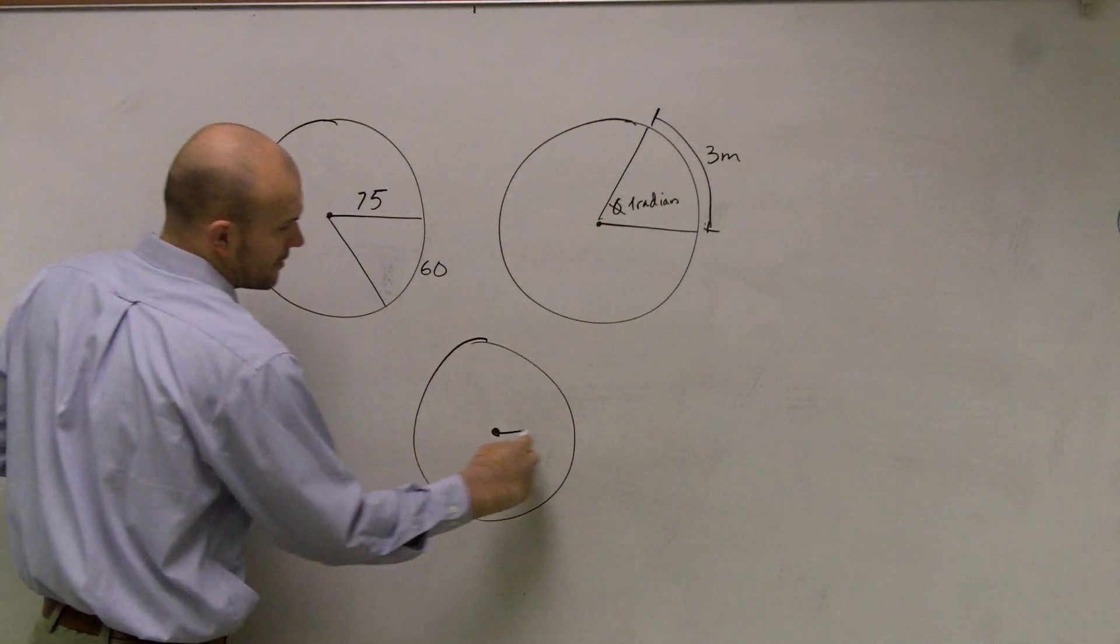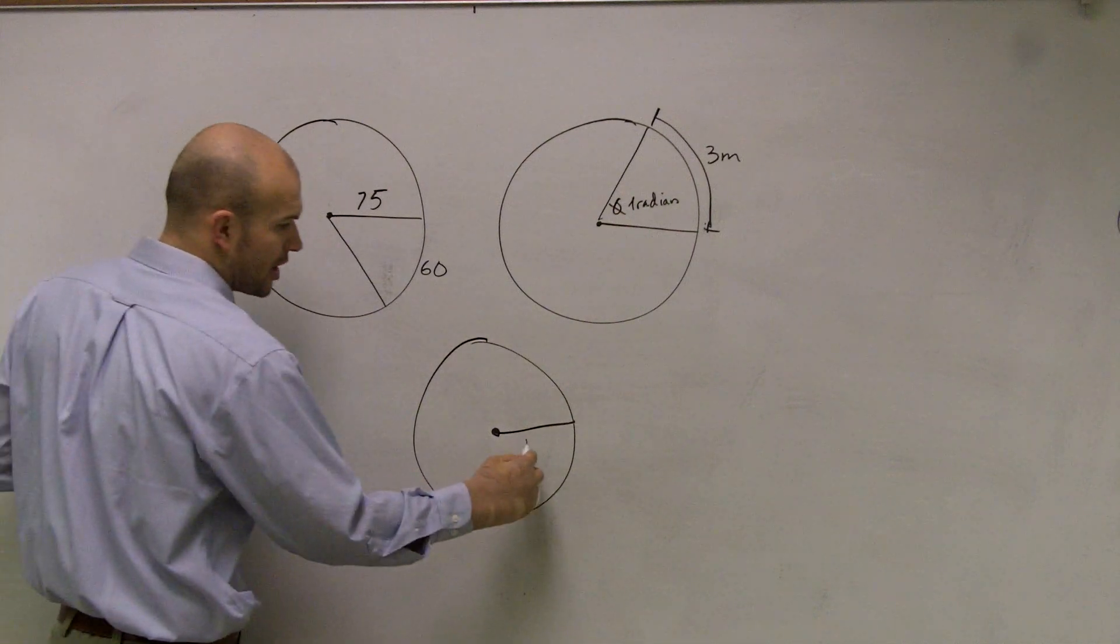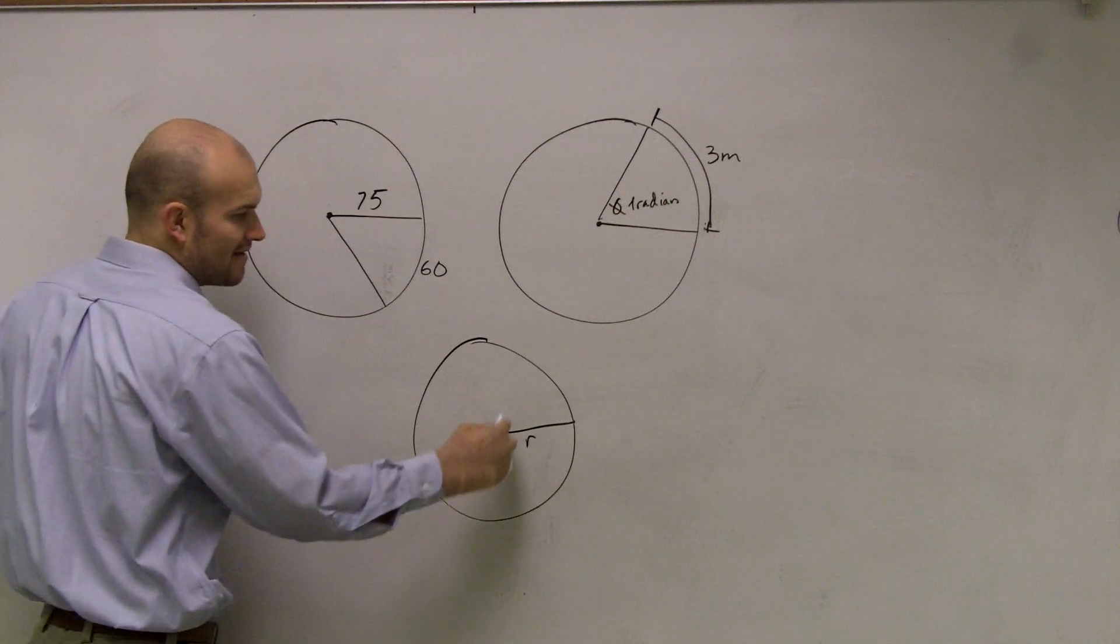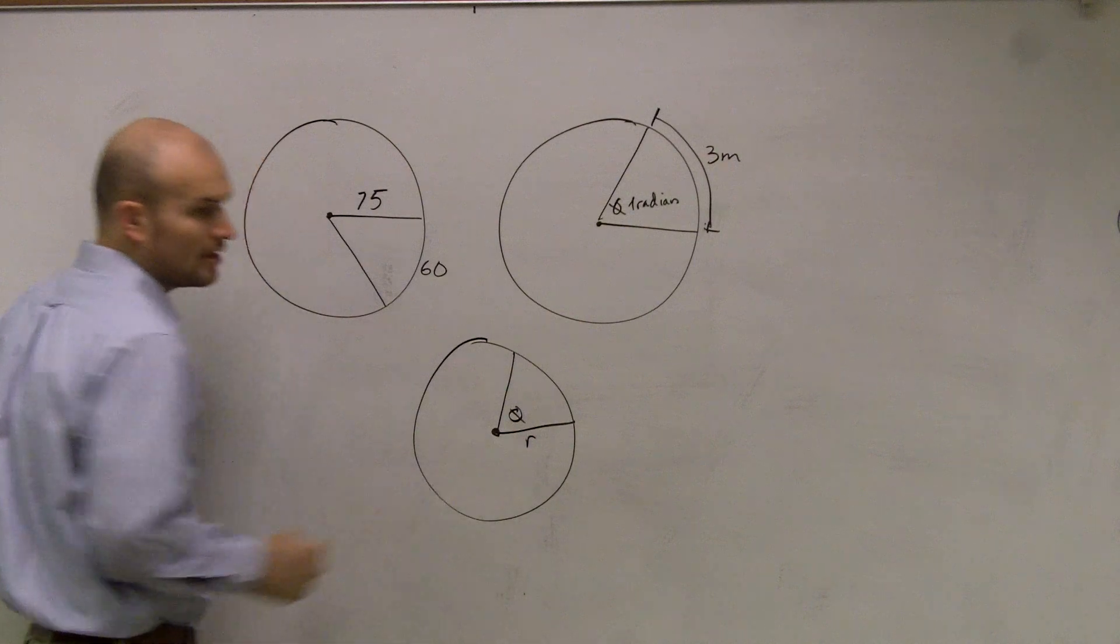On a circle, you have your radius, which is r. And we also have what we call a central angle, which we'll call theta.